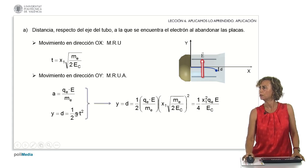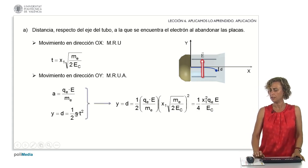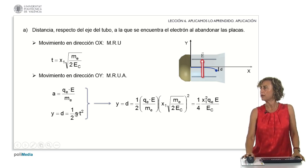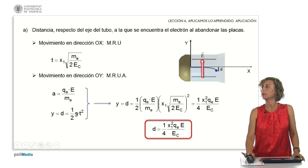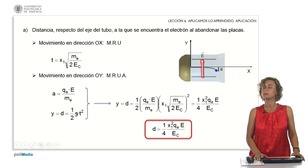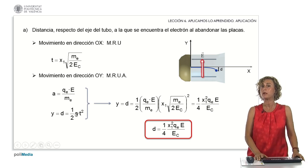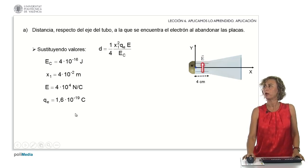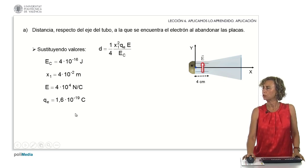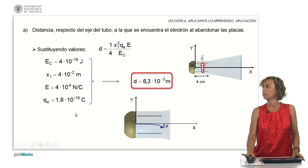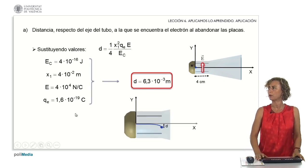Substituting in this expression, we obtain that y — and therefore the deflection — will depend on the electrostatic field. We have seen that there is a certain deflection whenever we have a field, so the electrons are deflected, and that deflection depends on the value of the electrostatic field. Substituting the values given by the problem, we obtain that the deflection is 6.3 times 10 raised to minus 3 meters.